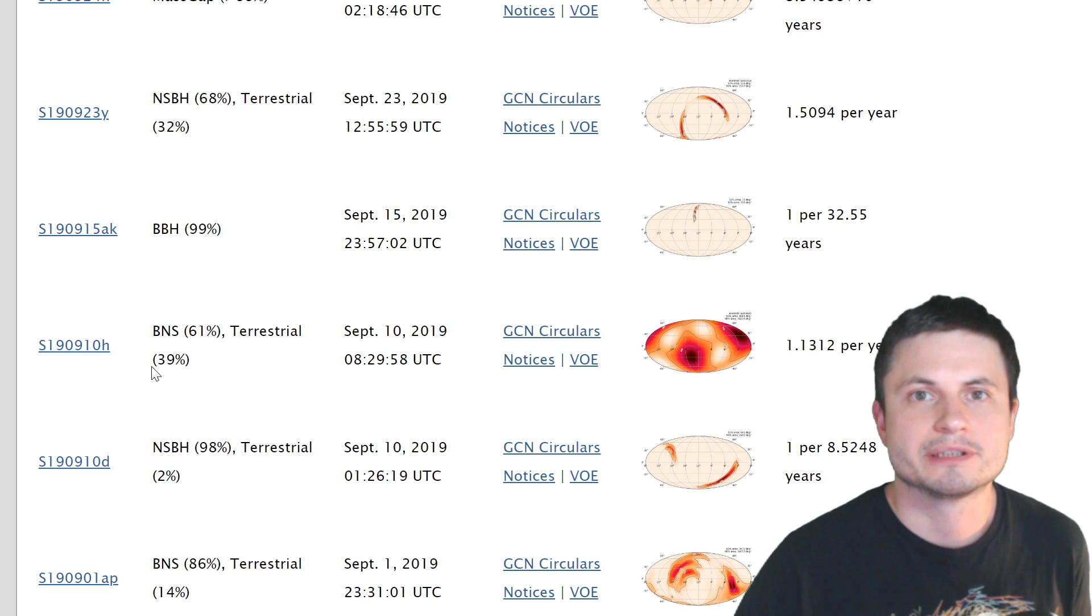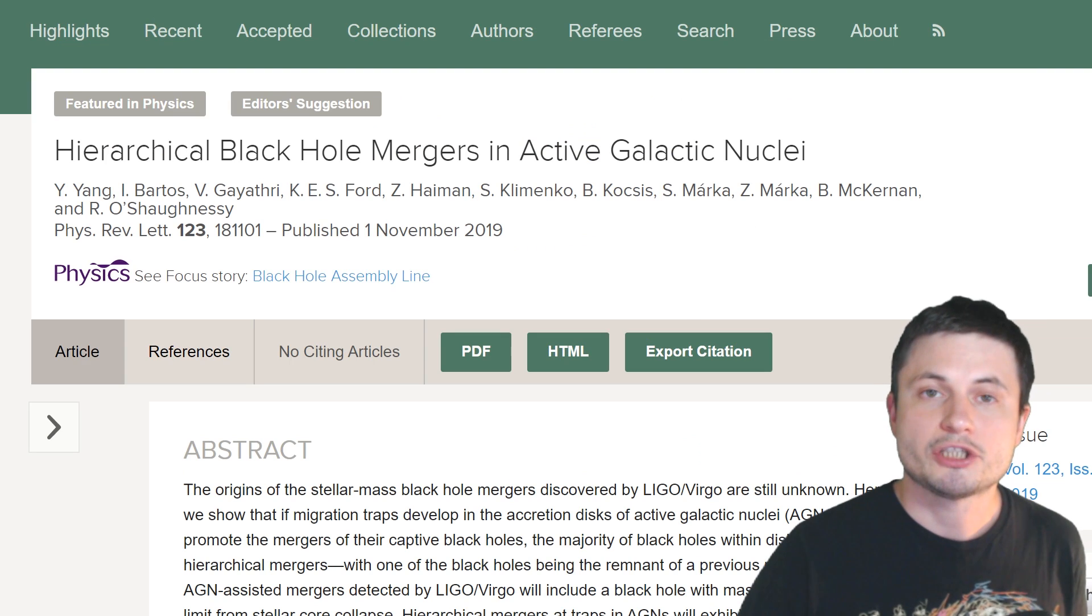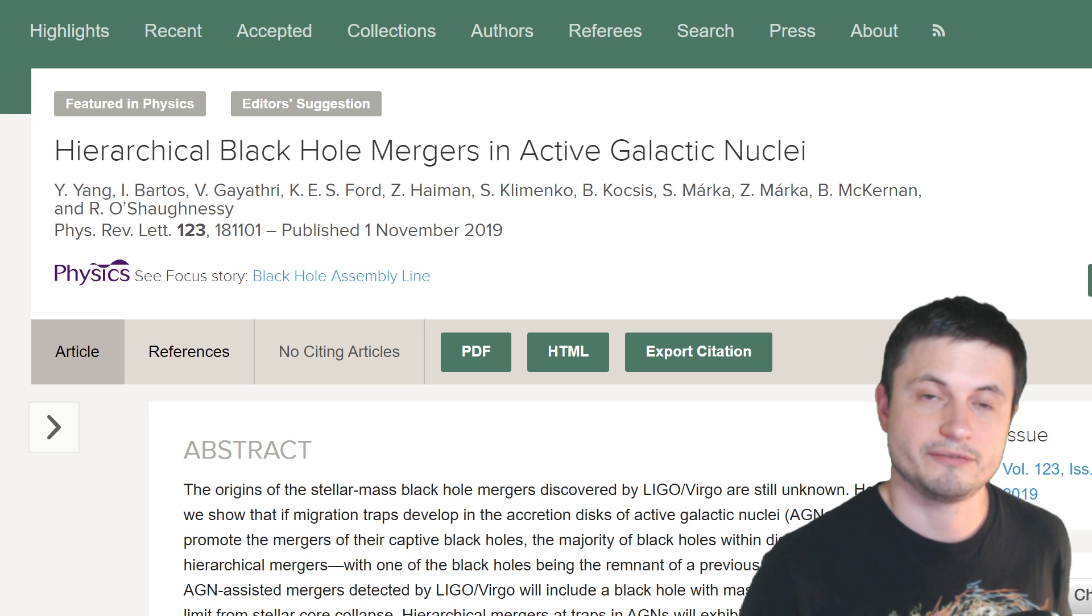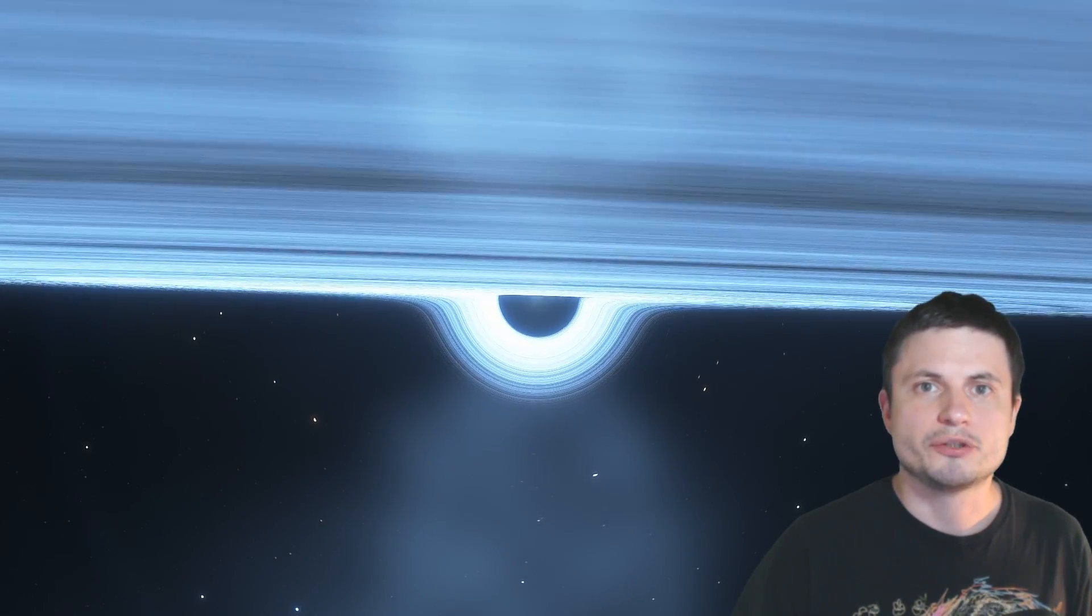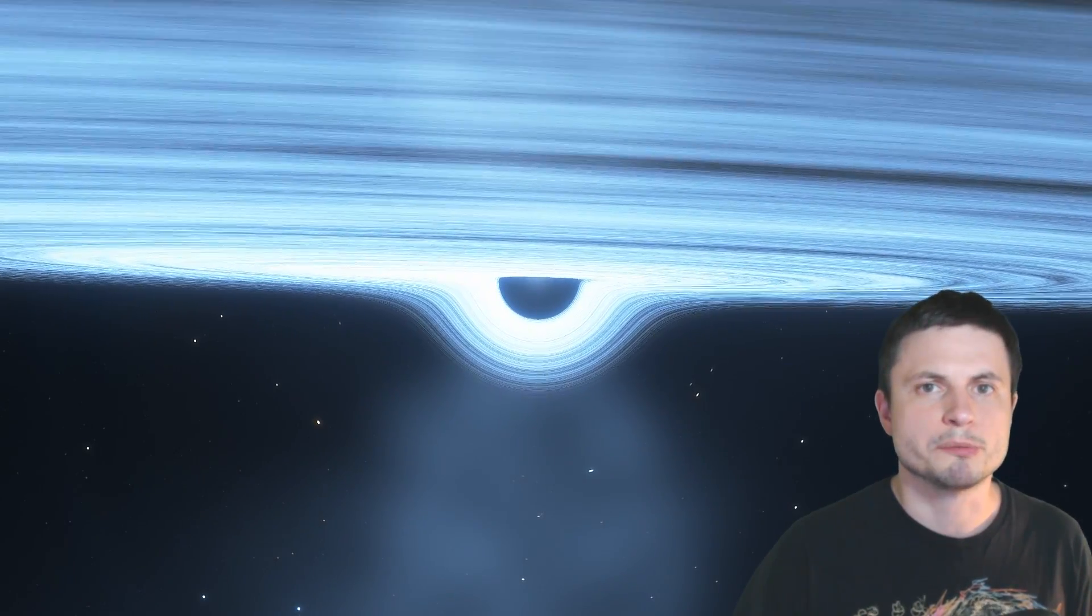And so this is where another paper comes in and tries to explain all of this and actually does a pretty good job in being very logical and very clear about what's probably happening and why we're seeing so many collisions. And to explain all of this we have to move right here into the accretion disk of a typical supermassive black hole.